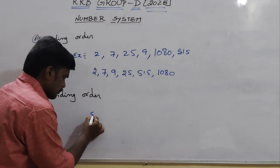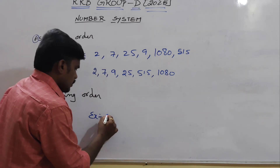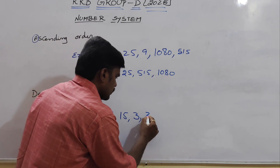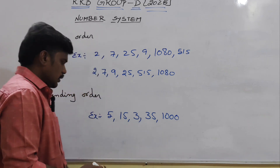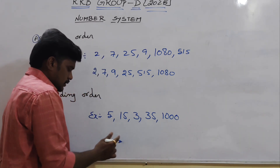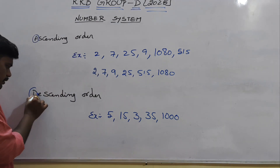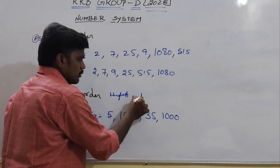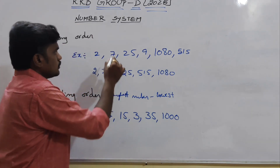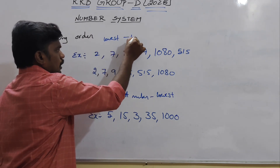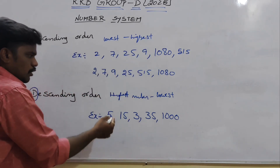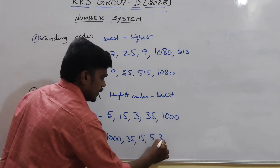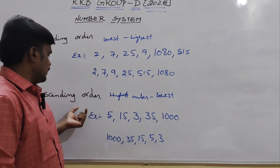Coming to descending order. Take numbers 1, 5, 15, 3, 35, 1000. D means decrease — from the highest number to the lowest number. So the highest is 1000, then 35, 15, 5, 3, 1. This is descending order — highest number to lowest number.